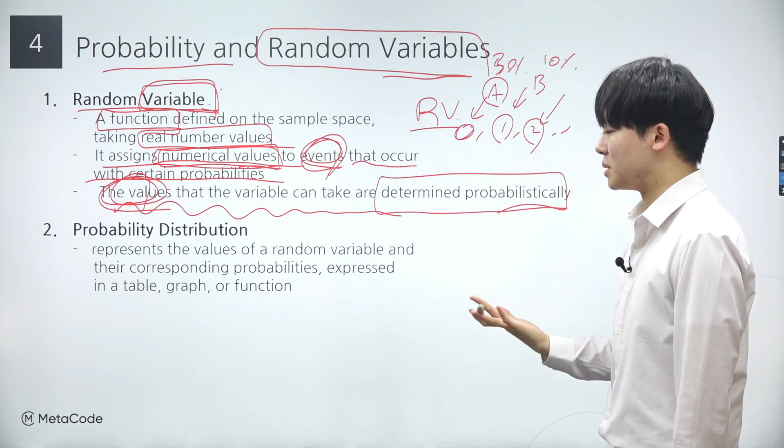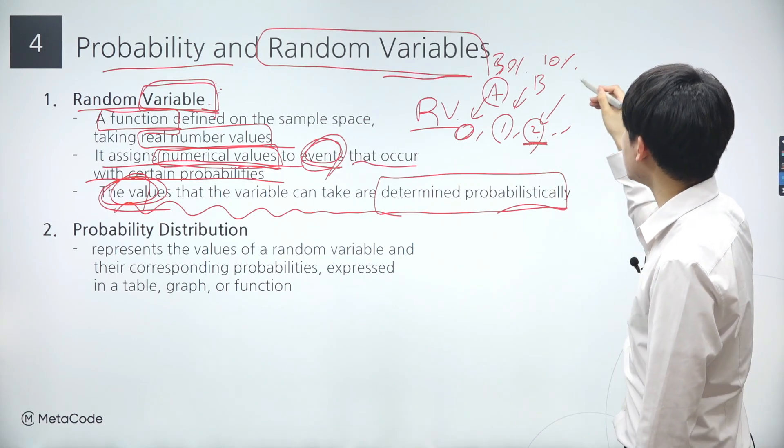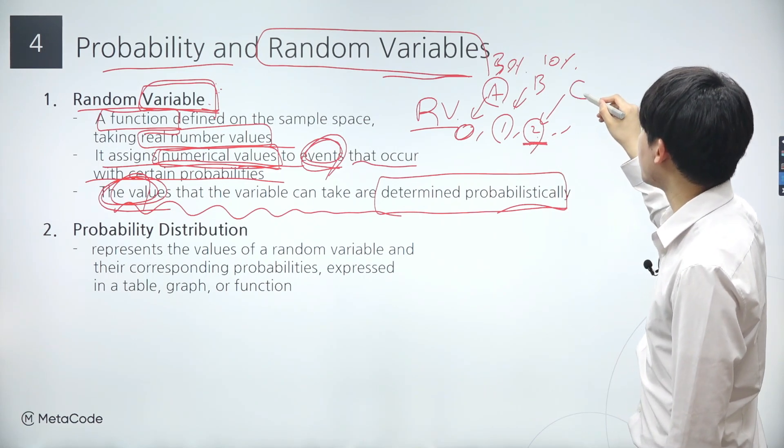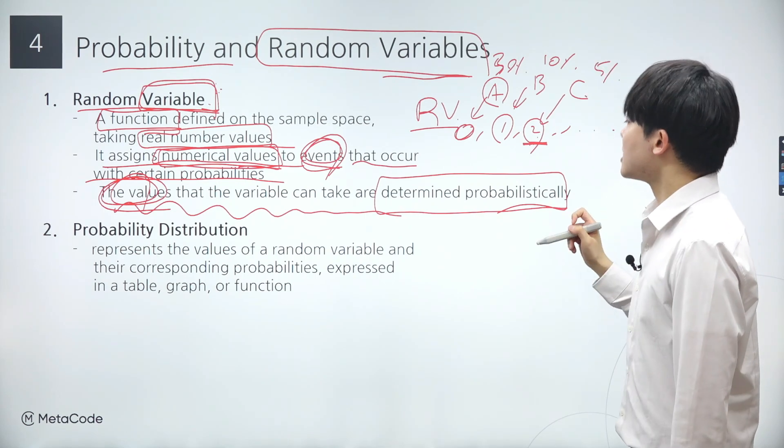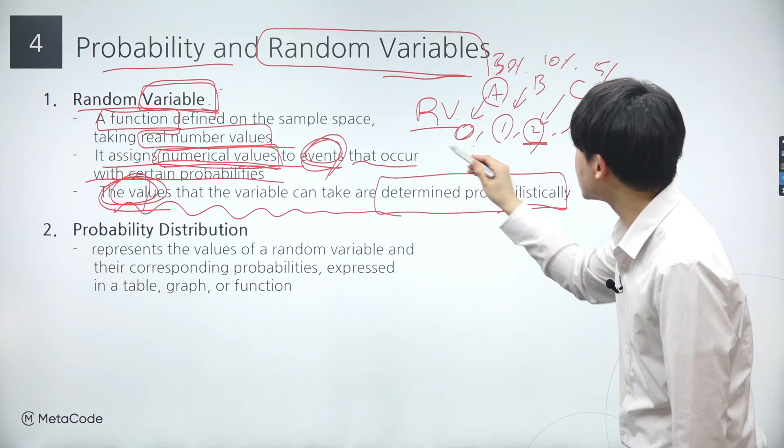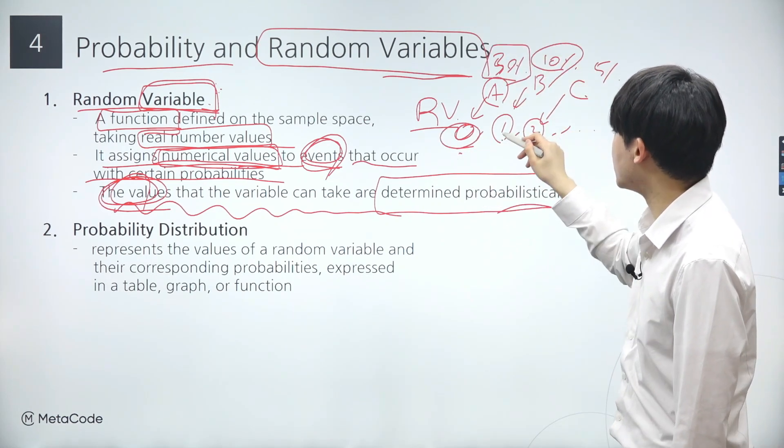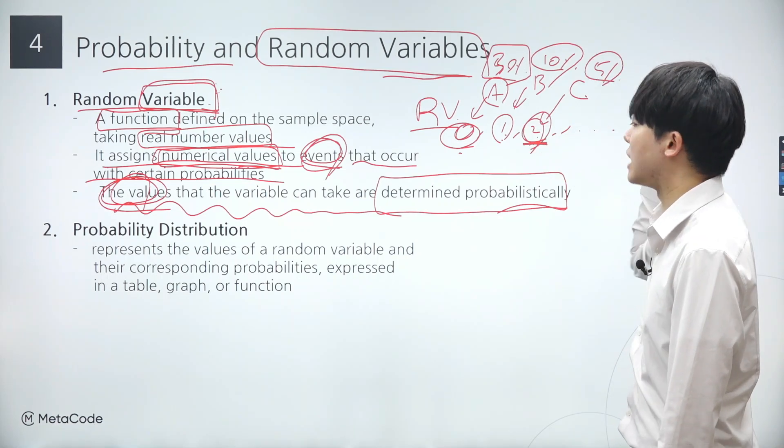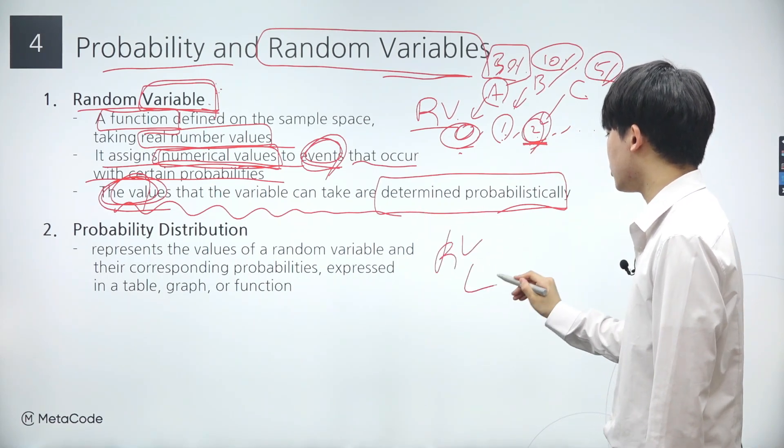Suppose the probability of event A is 30% and the probability of event B is 10%. Since a random variable assigns real values to events based on their occurrence, there must also be an event, say event C, mapped with the value 2. Let's assume the probability of event C occurring is 5%. In other words, the probabilities of the random variable returning values of 0, 1, and 2 are 30%, 10%, and 5%, respectively.